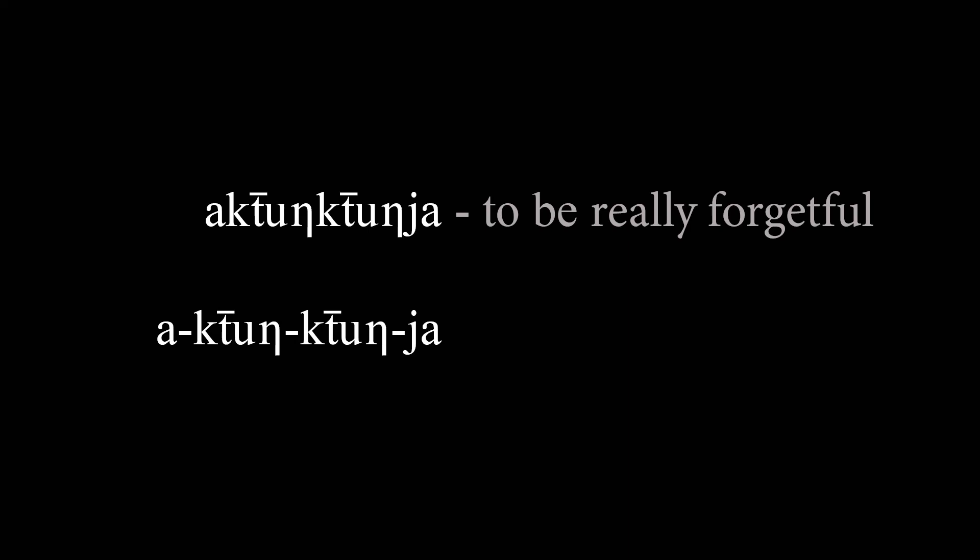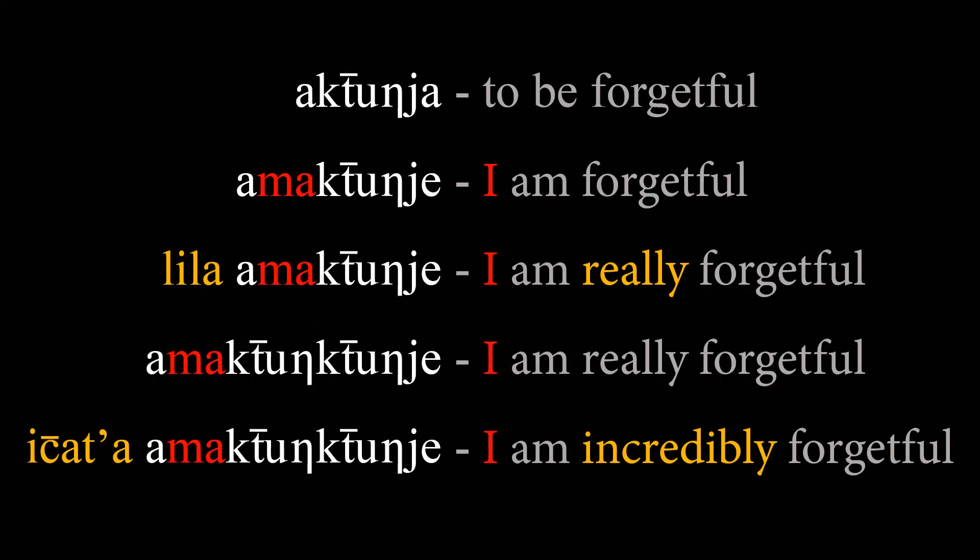Now if you want to say 'I am forgetful,' you say 'ah maktun ja.' This is a conjugation — you're adding one thing to the word. Look at the words on the screen: 'ah k'tun ja' means 'to be forgetful'; 'ah maktun ja' means 'I am forgetful.' The 'ma' in 'ah maktun ja' is 'I.' When a word that ends in 'a' is conjugated, many times that 'a' will turn into an 'e' at the end — that's why 'ah maktun ja' ends in the 'e' sound.